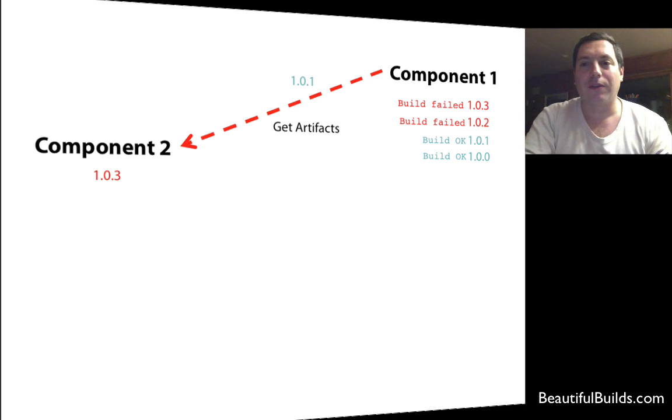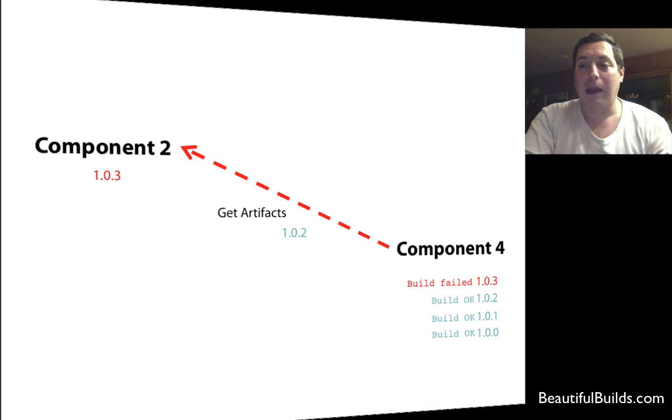Here's another simple example. Component four. Maybe that one has only been working for the last week, but the newest build, 1.0.3, has failed. So we're going to get version 1.0.2 into our component. And component four has its own dependency. So just look at this.